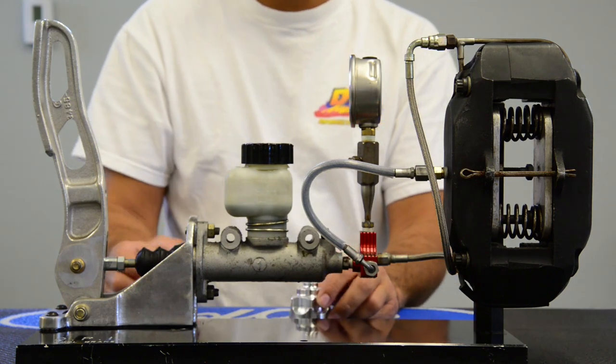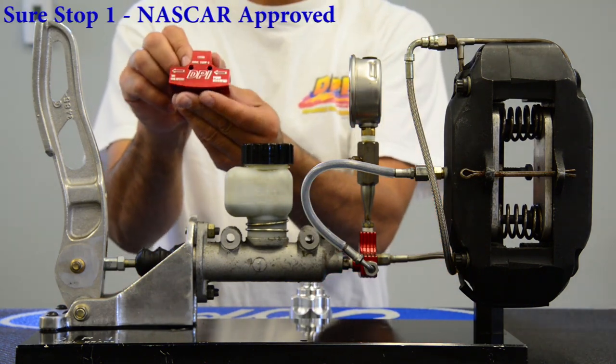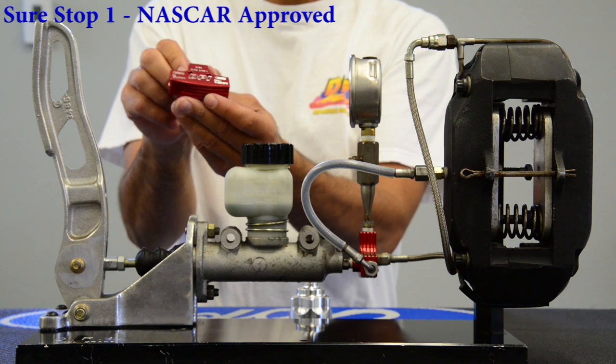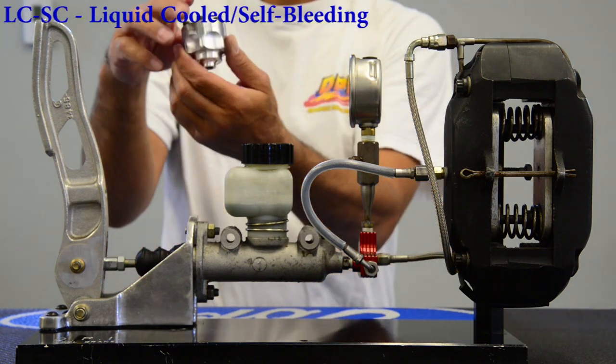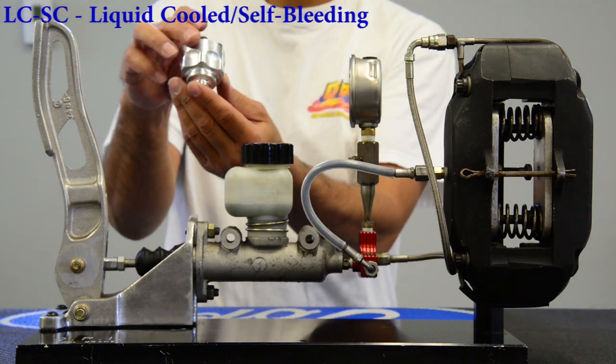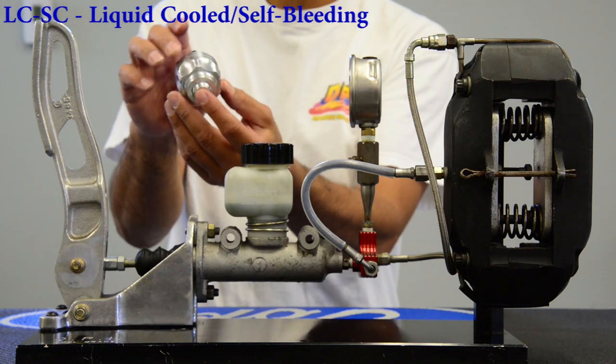DPI offers a couple of different styles. This is a SureStop 1, and this here is our LCSB brake recirculator. Just two different styles; they both work basically the same.